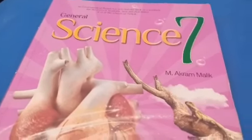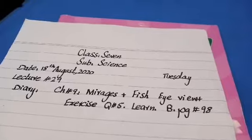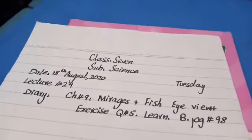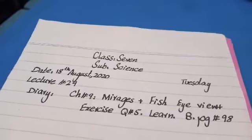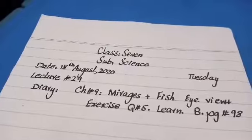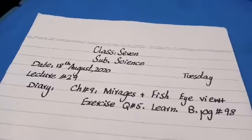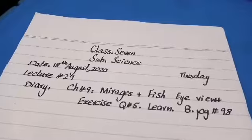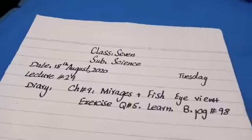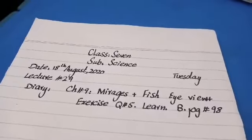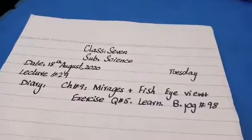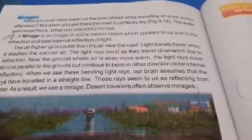Assalamu alaikum students. Today is 18th August 2020, Tuesday. Your lecture is number 29 and your diary is chapter number 9: Mirage plus fish eye view, and exercise question number 5. Learn book page number 98. So open your book page number 98 — our topic is mirage.